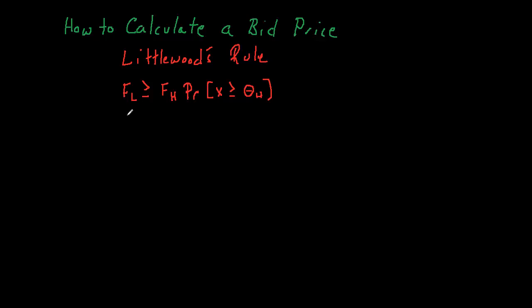We assumed that low fare customers arrive and request seats before higher fare customers. So there's a customer standing in front of us offering us a fare. We should accept that request if the fare being offered is at least as great as the expected value from holding that next seat for the higher fare customer. We calculated some probability that we could sell that next seat to a higher fare customer, multiply that probability by the higher fare, and we got an expected value.